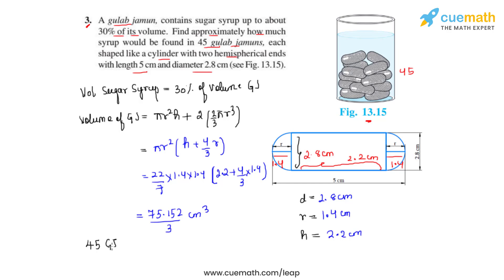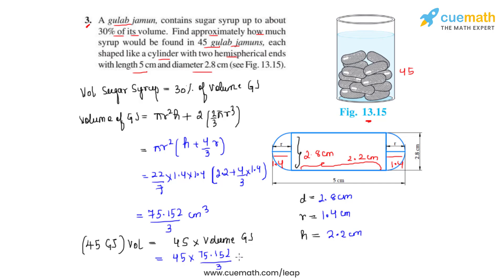Since we have 45 gulab jamuns, the volume of 45 gulab jamuns equals 45 times the volume of one gulab jamun. Calculating 45 × 75.152 ÷ 3, we get the volume of 45 gulab jamuns as 1127.28 centimeter cube.